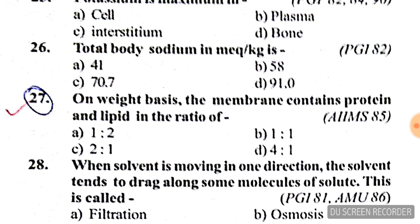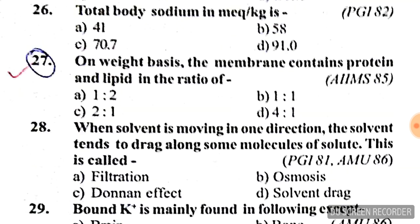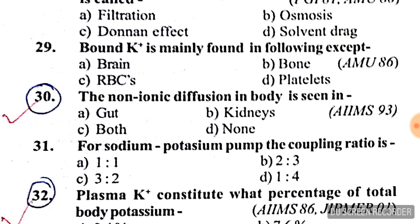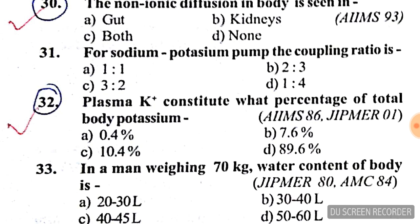Question 29: non-ionic diffusion in the body is seen in — see all four options, answer is C. Question 30 answer is also C — non-ionic diffusion occurs in the gut and kidney. Question 32: plasma potassium constitutes what percent of total body potassium? Answer is A, 0.4 percent.